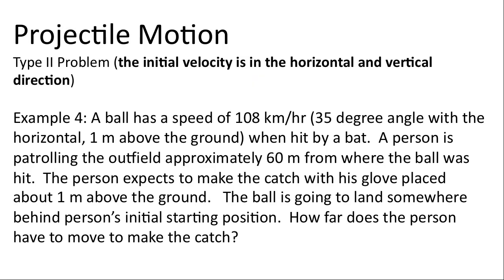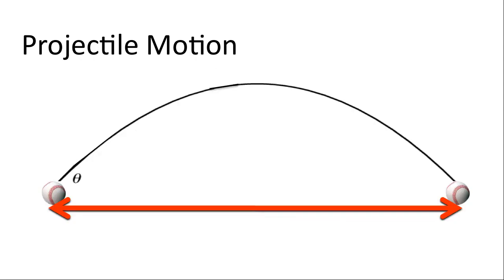A ball has a speed of 108 km an hour, 35 degree angle, with respect to the horizontal. Hit 1 meter above the ground by a bat. A person is patrolling the outfield approximately 60 meters from where the ball was hit, and expects to make the catch with his glove placed about 1 meter above the ground. The ball is going to land somewhere behind the person's initial starting position. How far does the person have to move to make the catch? Here's the basic diagram. The ball is going to be hit at a specific angle, it's going to land, and ultimately we're solving for the range, or the distance that this ball is going to travel. This is a classic physics problem.